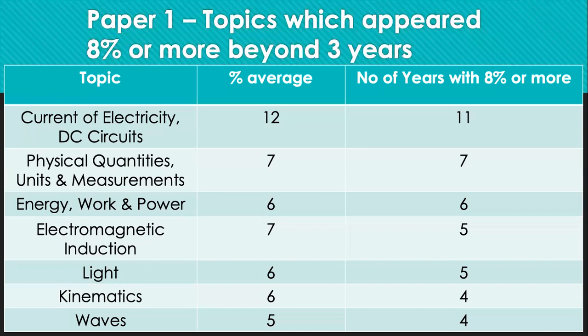Next, energy work power, which has an average percentage of 6%, appeared at least 6 times over the past 11 years with 8% or more. This is a very important topic also. Do pay attention to the concept of work done. How do you apply the equations of kinetic energy, GPE, gravitational potential energy to the question and understand how to apply the concept of power equals to rate of work done in your question.